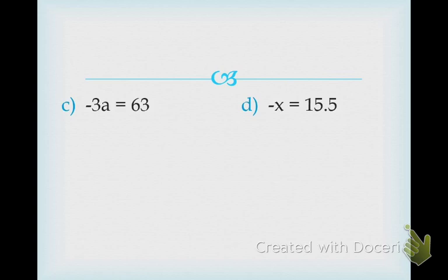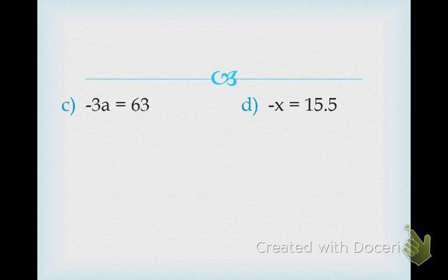Problems C and D are very similar to the last two problems, but this time I'm bringing in a negative number — it's an integer, some positive and some negative. I have negative 3a equals 63. What's the variable? A. I want to get A all by itself. What is not allowing A to be alone? Multiply by negative 3. A lot of people try to say this means subtract 3, but if you have an integer directly next to a letter, you always have to multiply it. So what is the opposite of multiply by negative 3? Divide by negative 3.